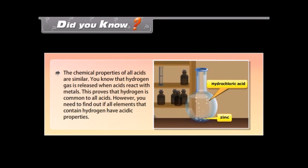Did you know? The chemical properties of all acids are similar. Hydrogen gas is released when acids react with metals. This proves that hydrogen is common to all acids. However, you need to find out if all elements that contain hydrogen have acidic properties.